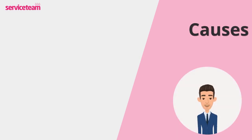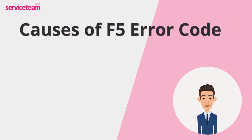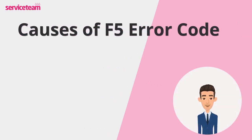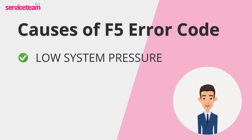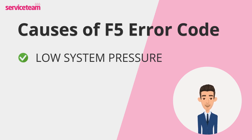Let's go through the most common reasons causing the F5 error on your Glowworm boiler. First up, low water pressure. Your boiler needs just the right pressure to function properly. If it dips too low, the F5 fault code can pop up.